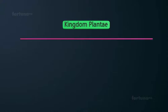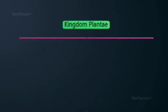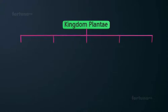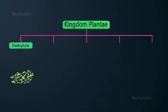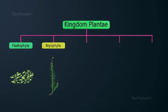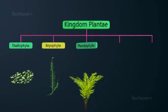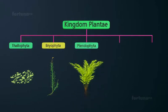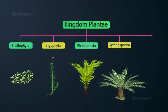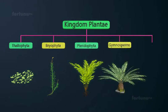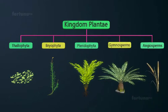Plants have five broad subdivisions of phyla: Thallophyta, Bryophyta, Pteridophyta, Gymnosperms, and Angiosperms.